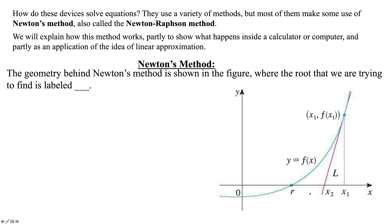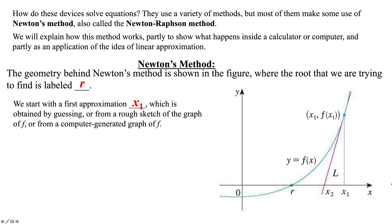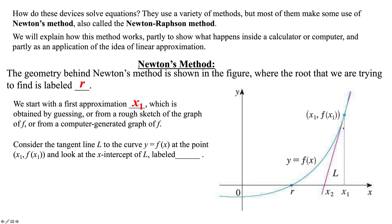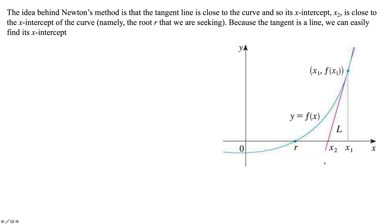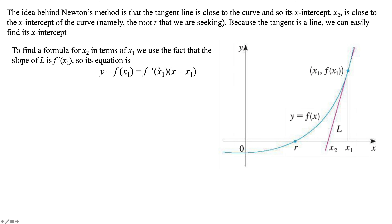Newton's method tries to find the value r — the x-intercept. We start at x sub 1. Newton's method discovered that if you take the tangent line through the point (x sub 1, f(x sub 1)), you create another x-intercept of the tangent line getting closer and closer to r. Start with x sub 1, find the tangent, then find the point x sub 2 because it's a linear line.